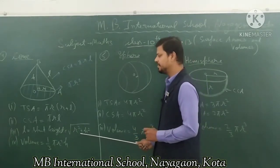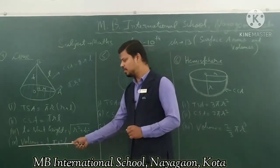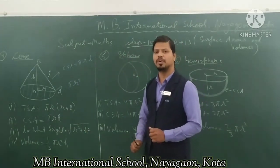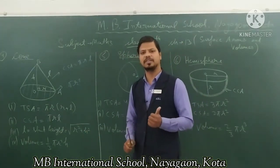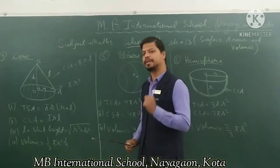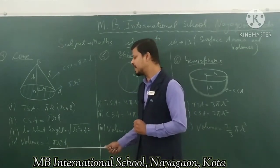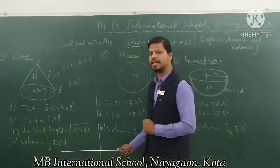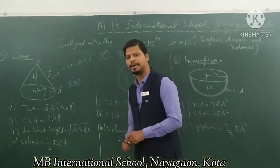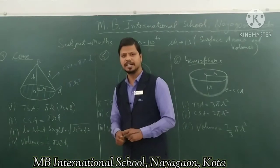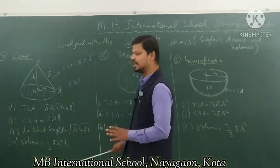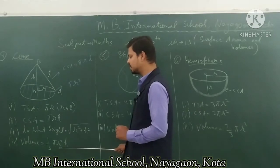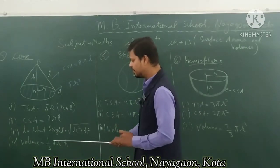The volume of a cone is one-third of the volume of a cylinder. So the volume of a cone is one upon three pi r square h. The unit for volume is cubic units and for area it is square units.